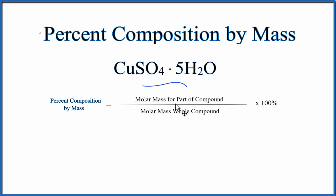To find the molar mass for the part, the 5H2O, we multiply 5 times the molar mass of water. When we do that for these 5H2O, 5 times the molar mass of water gives us 90.10 grams per mole.